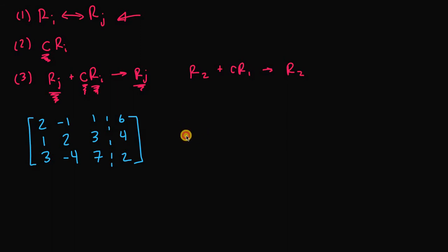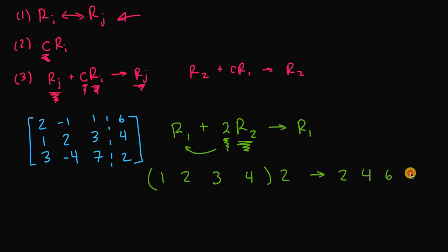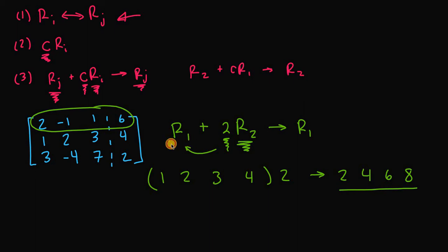Let's do another one: take r1 and add to it a multiple of r2. We multiply row two by the non-zero constant 2 and add it to row one, yielding a new row one. Row two is 1, 2, 3, 4, and when we multiply those elements by 2 we get 2, 4, 6, 8. Now we add to it the original row one.